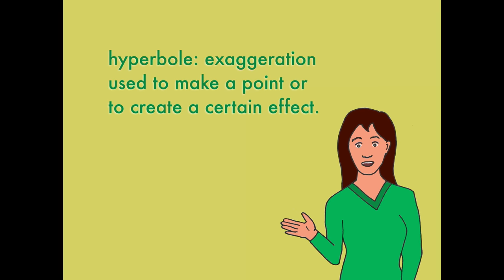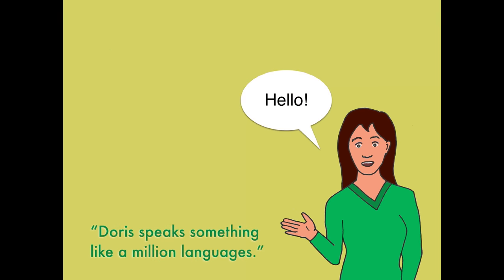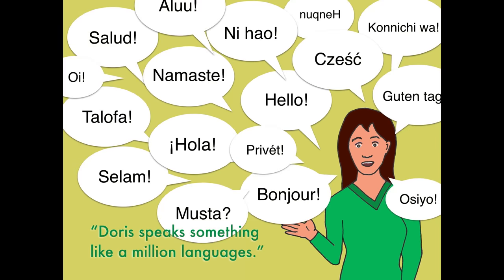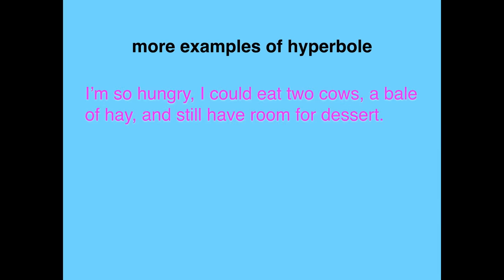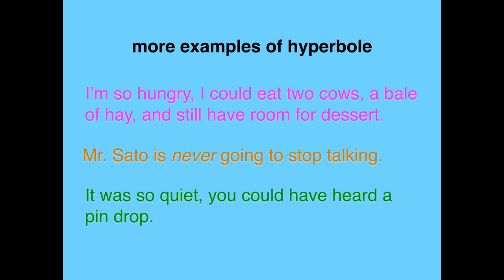Hyperbole is just a big word that means exaggeration used to make a point or to create a certain effect. If you say that your friend speaks something like a million languages, well, that's hyperbole — but you've made your point: your friend speaks an impressive number of languages. I am so hungry I could eat two cows, a bale of hay, and still have room for dessert. Hyperbole. Or, Mr. Sato is never going to stop talking. Or, it was so quiet you could have heard a pin drop. All examples of hyperbole, a form of figurative language.